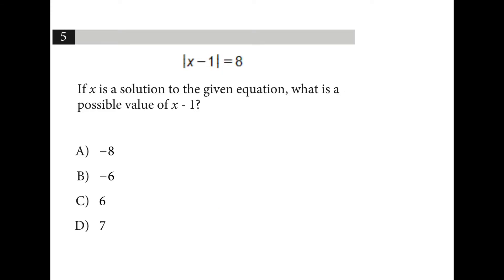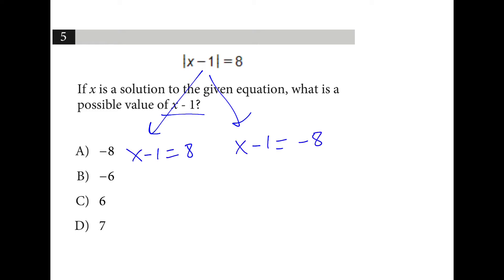What is a possible value of x minus 1? If we split this, there are two possible values: x minus 1 is equal to positive 8, or x minus 1 is equal to negative 8. There's our answer.